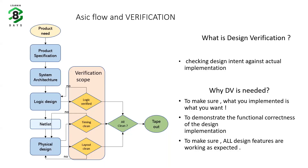This is the basic flow. From a product requirement, first a product specification is generated. From the specification, a system-level architecture is generated, and based on the architecture, designers will design the logic. This logic design part is basically our RTL, which is written mostly in Verilog or VHDL.